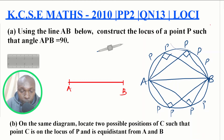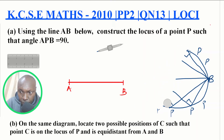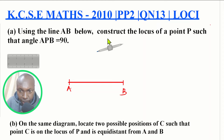We therefore come to the conclusion that point P will be on this arc, and to construct the locus of point P such that angle APB equals 90 degrees, we shall draw a circle with AB as the diameter. To construct the circle, we just need to get the radius.